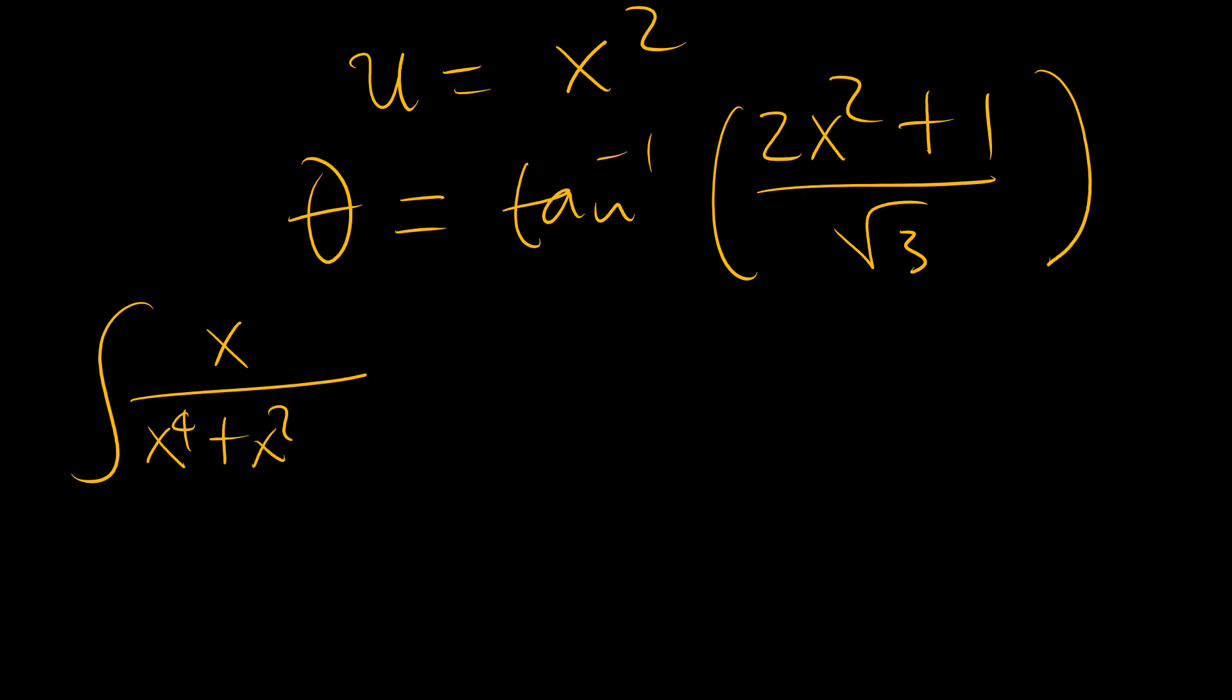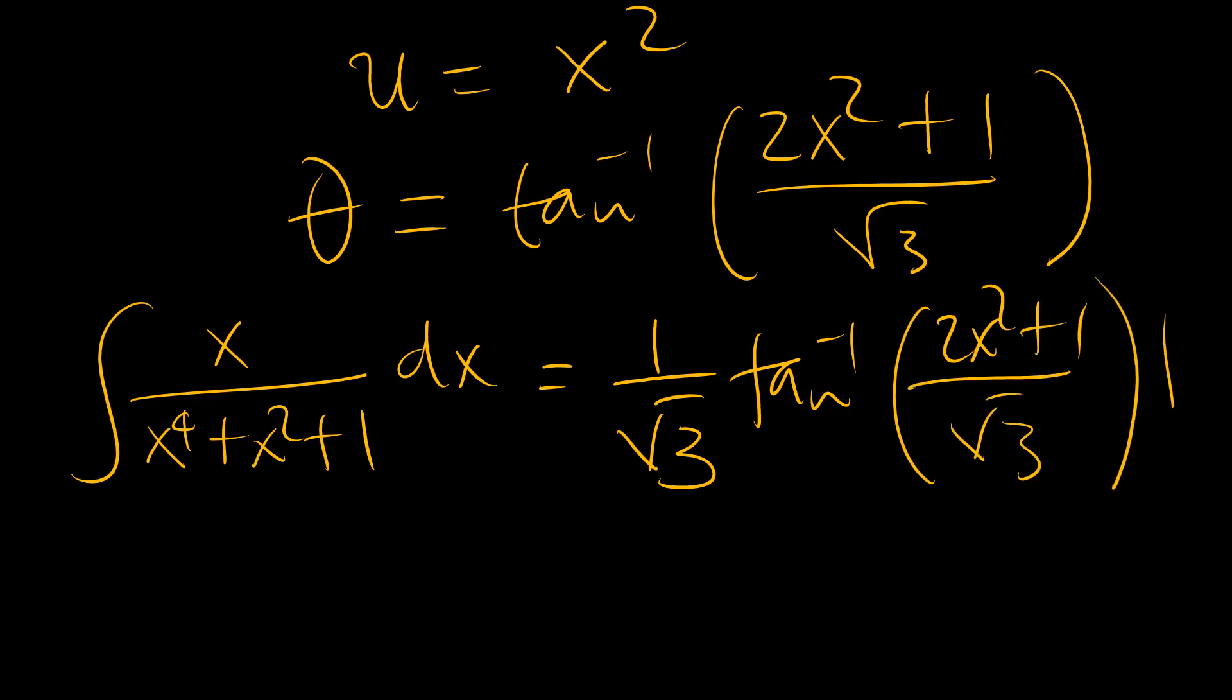And since our integral of x over x to the 4 plus x squared plus 1 is equals to 1 over root 3 theta, which is the same as 1 over root 3 times the arc tangent of 2x squared plus 1 over root 3, plus the integration constant.